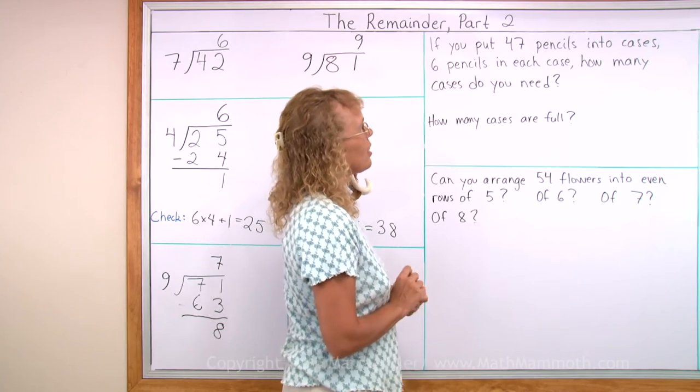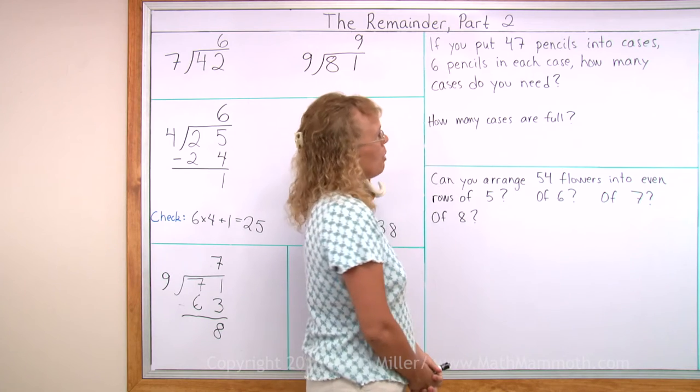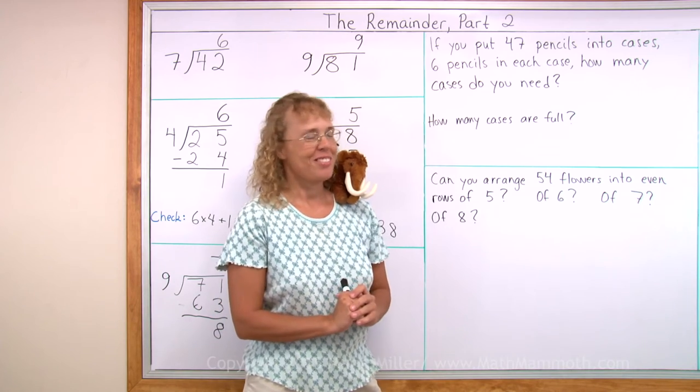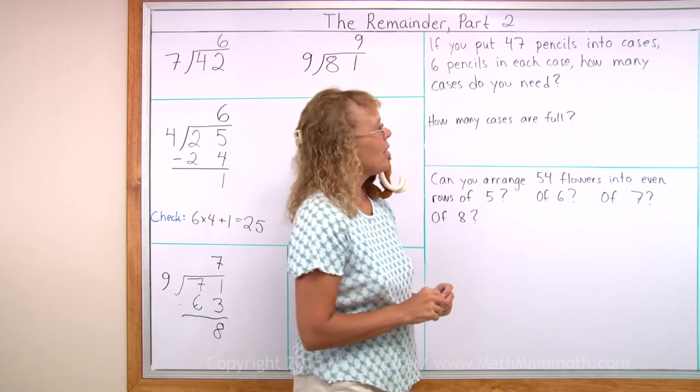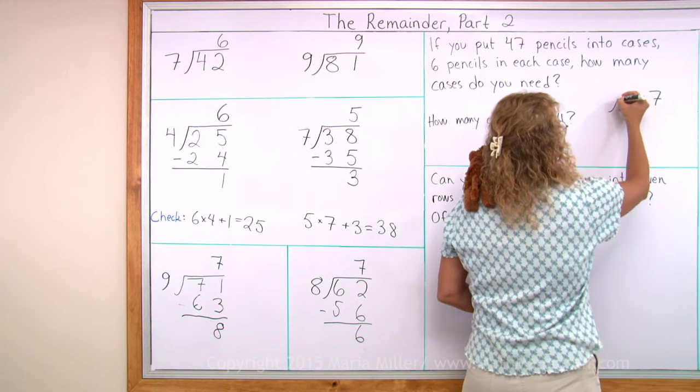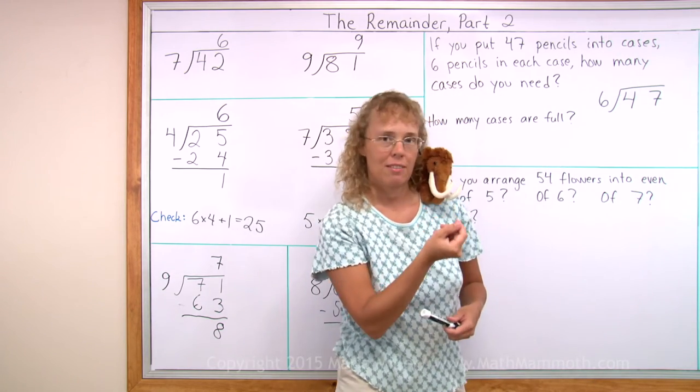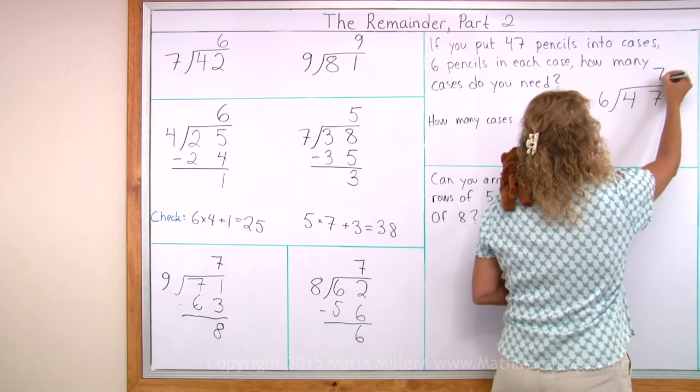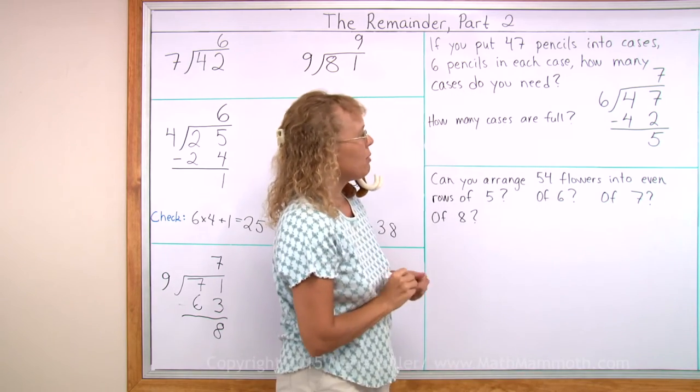If you put 47 pencils into cases, 6 pencils in each case, how many cases do you need? How many cases are full? It kind of sounds like we're going to have one case that's not going to be full. 47 pencils into cases. It's a division problem, right? So let's divide. 47 divided by 6. How many 6's are in 47? 6 times 8 is 48. Well, that's too much. So 6 times 7 should work. 7 times 6 is 42. Subtract. Remainder 5.